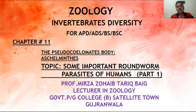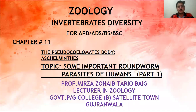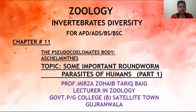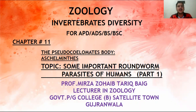We have different worms — roundworms, also called nematodes, which have pointed ends. Because the organism has pointed ends, we call them roundworms. There are different categories which we will discuss here.